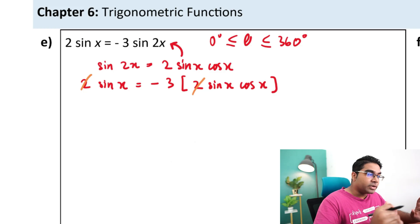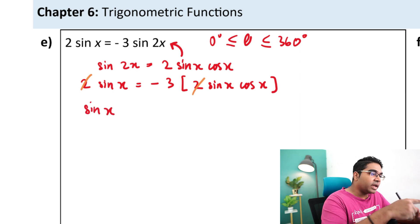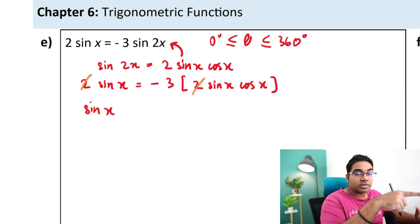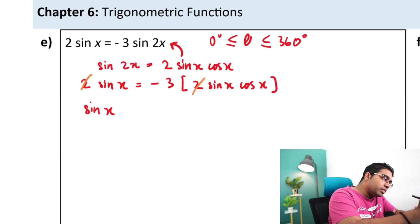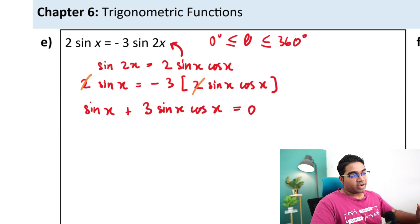So that's exactly what we're going to do. And so we bring all the terms to one side. Let's choose the left side and therefore sine of x. This is negative 3 multiplied into sine x cos x. So this will be plus 3 sine of x cosine of x equals to 0. And now we can factorize.